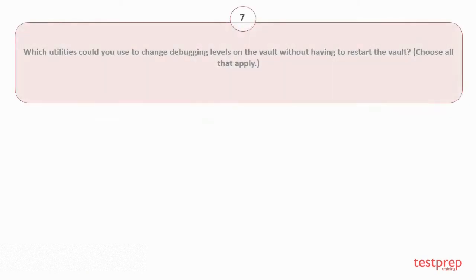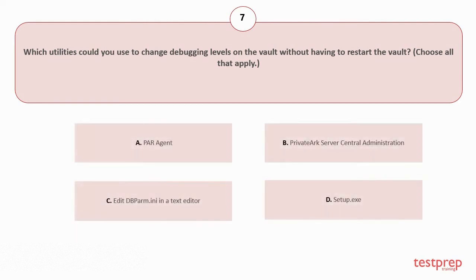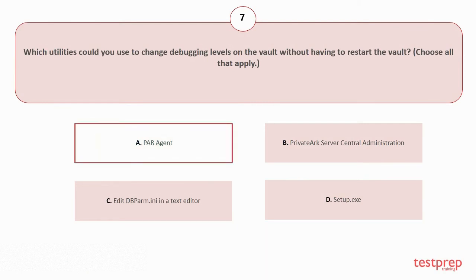Question number 7: Which utilities could you use to change debugging levels on the vault without having to restart the vault? Choose all that apply. Your options are: A. Paragent, B. Private Arc Server Central Administration, C. Edit dbparm.ini in a text editor, D. Setup.exe. The correct answer is option A.